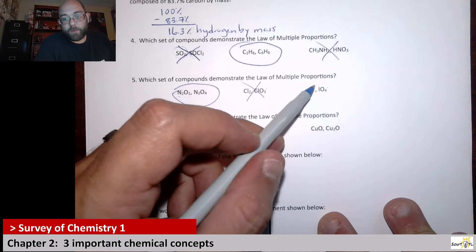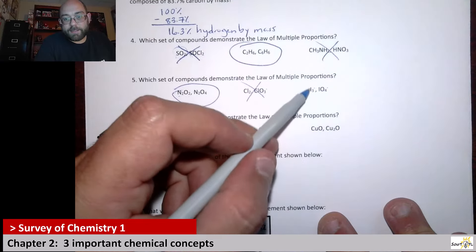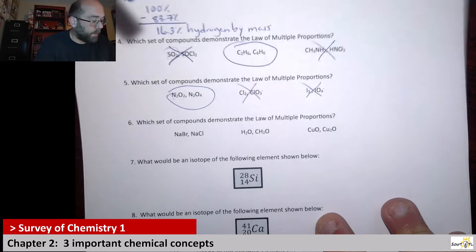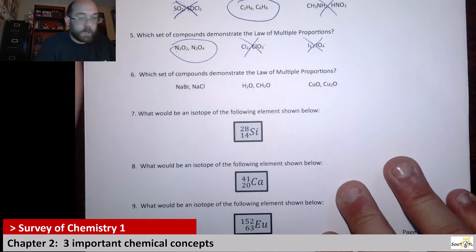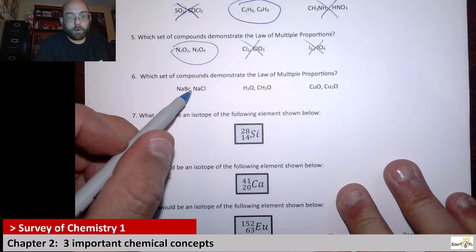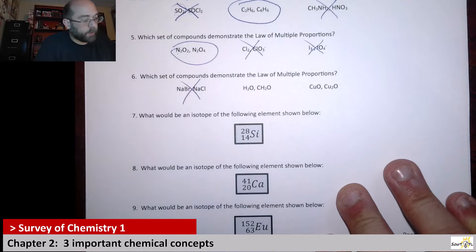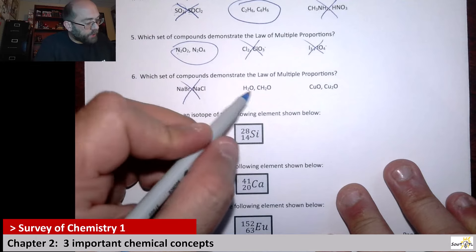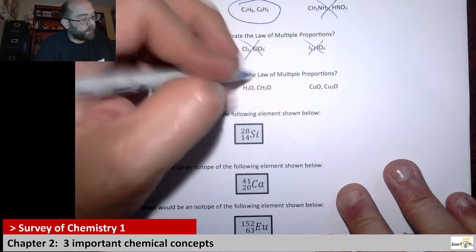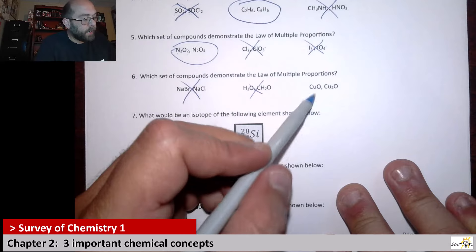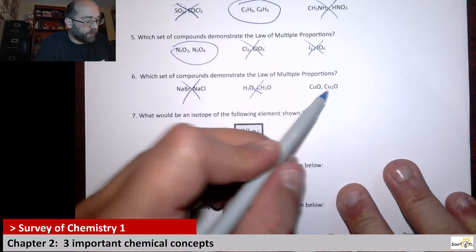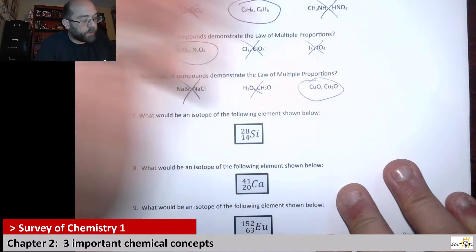For I3⁻ versus IO4⁻: I3⁻ doesn't have oxygen and IO4⁻ does, so there's no law of multiple proportions to consider. For NaBr and NaCl: they both have sodium, but don't share bromine or chlorine, so this isn't following the law. For H2O and CH2O: they both have hydrogen and oxygen, but don't both have carbon, so that's not following the law either. For the copper-oxygen pair, we see different numbers of coppers — that is following the law of multiple proportions.